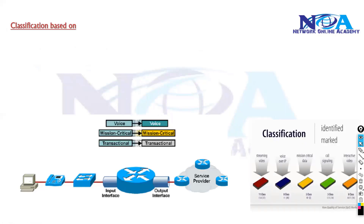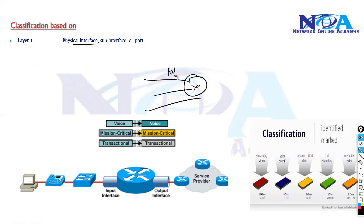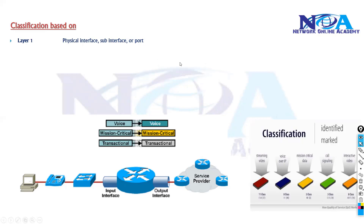Now we need to understand based on what factors we are going to classify. There are different options. At layer one, we can select a specific interface — for example, if a router is connected to three different interfaces, we can match all traffic coming from a particular interface and treat it separately. We can also classify based on physical ports, sub-interfaces, or MAC addresses.